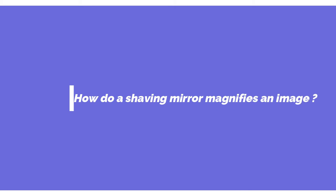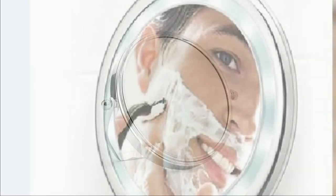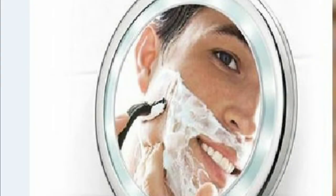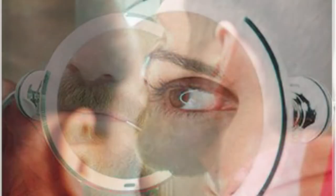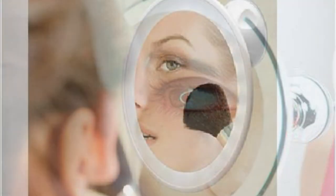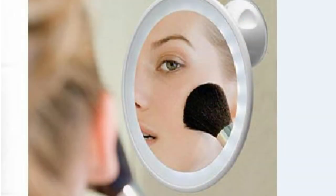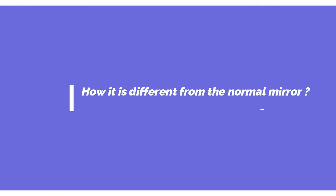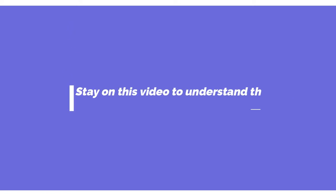Welcome to Science Theory, the learning channel. Today's video we are going to see how a shaving mirror gives a magnified image of an object. We see many mirrors in our daily life, and this shaving mirror is a peculiar one — it gives a magnified image of the object placed in front of it. It is widely used for shaving, grooming the face, and for facial touch-ups. How is this mirror doing that? Will the object look inverted if seen in a shaving mirror?